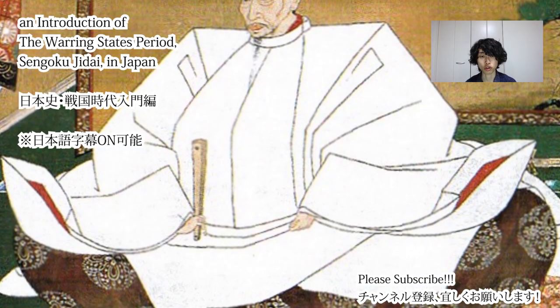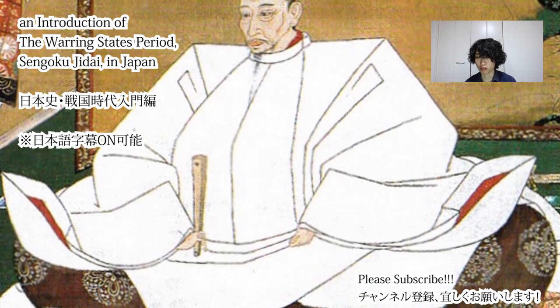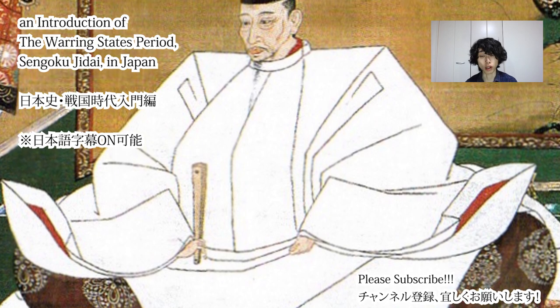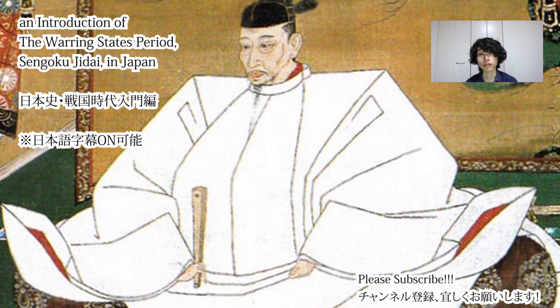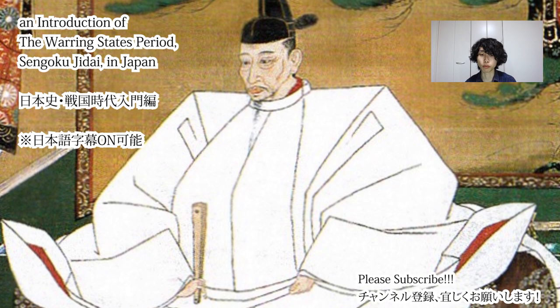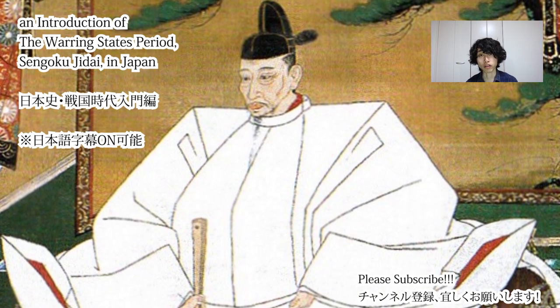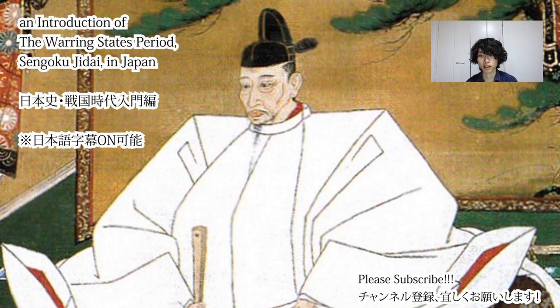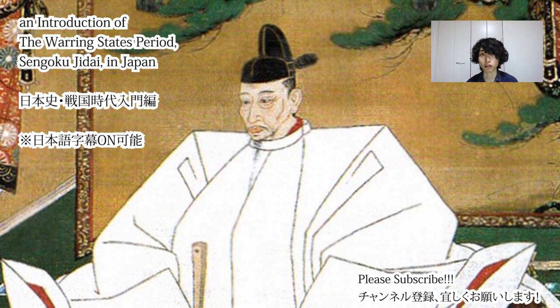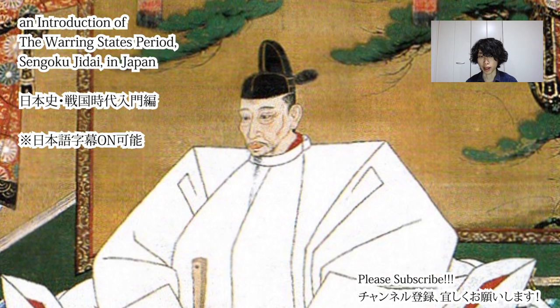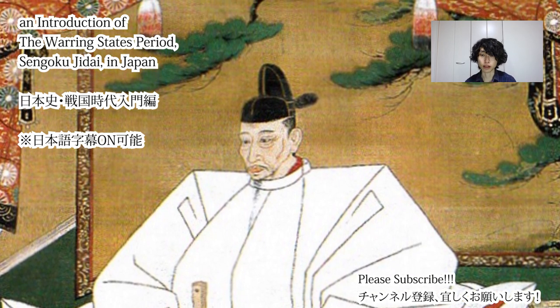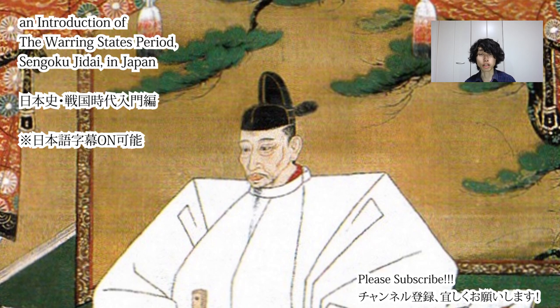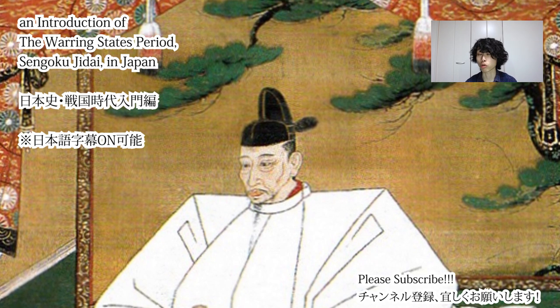The second unifier is Toyotomi Hideyoshi. He was originally one of Oda Nobunaga's vassals and came from a peasant family. Nobunaga employed him, and Hideyoshi made many remarkable military achievements. After Nobunaga died, Hideyoshi finally completed the unification of Japan almost completely.